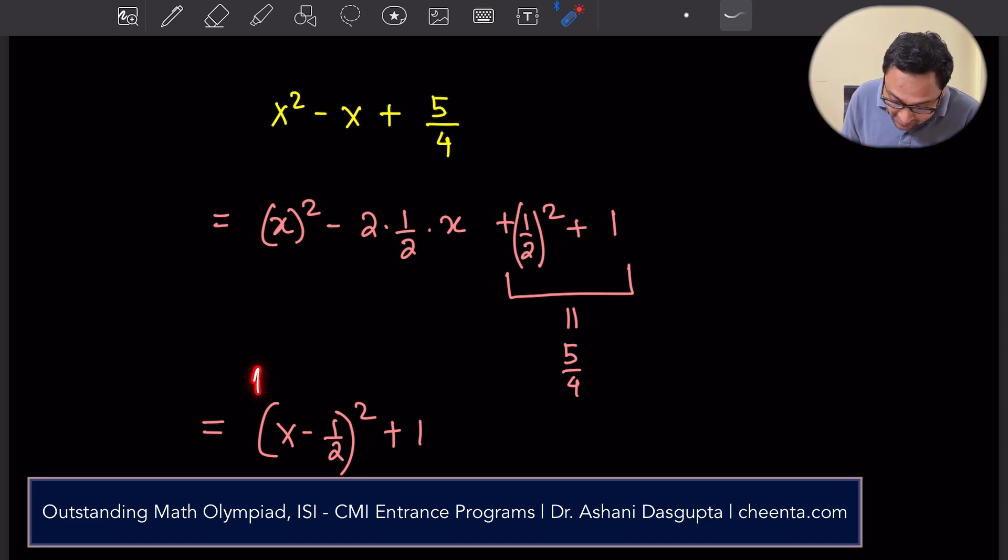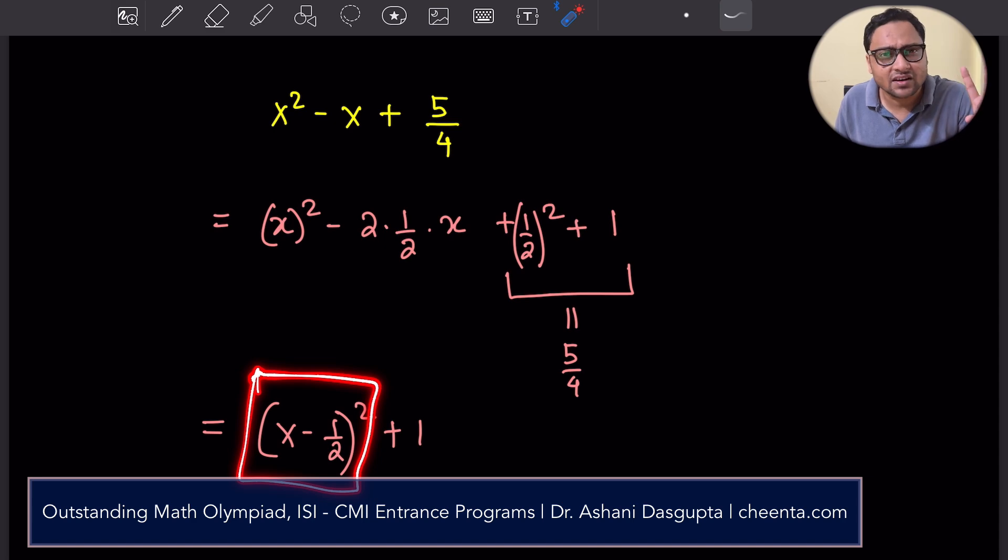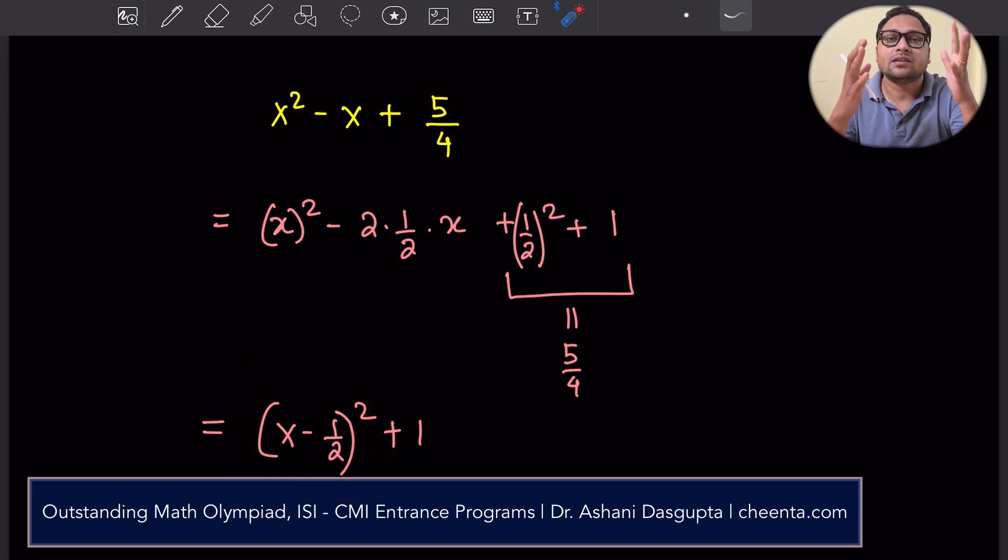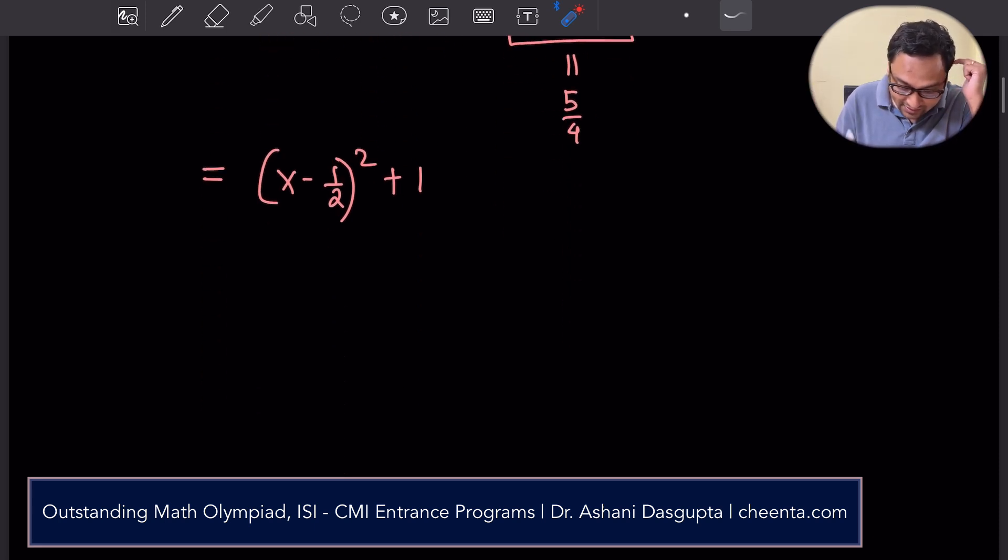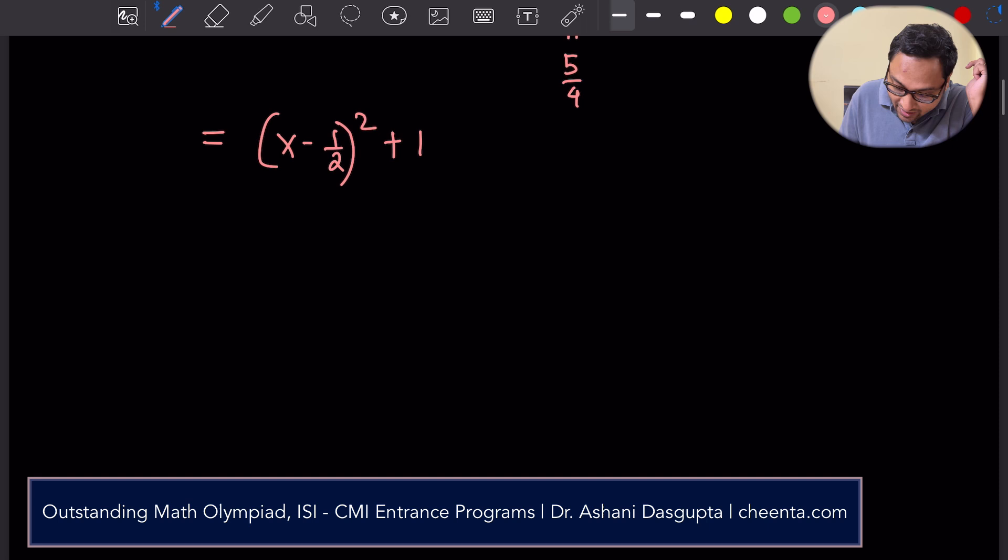Why? Because this is a square quantity. The smallest value that it can take up is 0. So x minus half whole square will always be 0 or more than 0, plus 1. So it will always be 1 or more than 1. Okay, that's great. Now we have a better understanding of the equation.